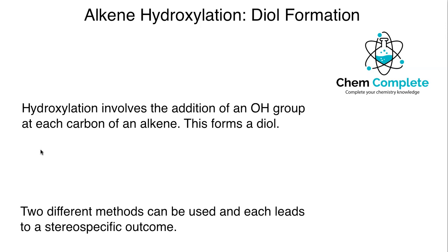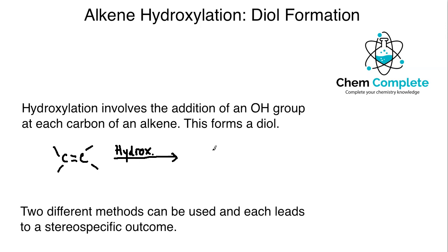What this generally looks like is that we take the alkene and expose it to hydroxylation. We'll talk about what reagents can actually perform the hydroxylation reaction and what their outcomes will be. But what we can generally expect is that we will get two alcohol groups, one on each carbon that was involved in the double bond, as well as the other functionalities present around the alkene to begin with.